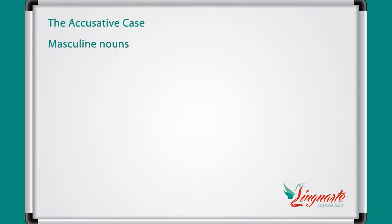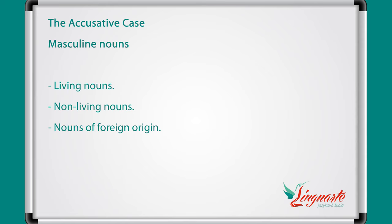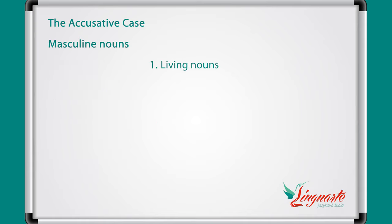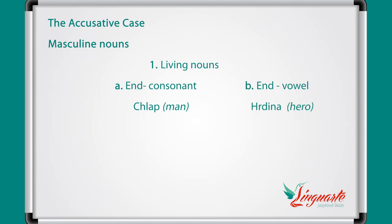Let's start with the masculine. The masculine nouns have three categories: living nouns, non-living nouns, and nouns of foreign origin. The living nouns have two types: nouns ending with a consonant, like chlap (man), and nouns ending with a vowel, like hrdina (hero).